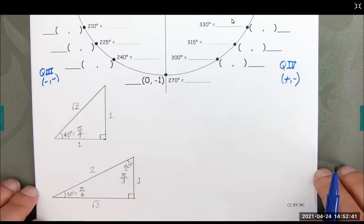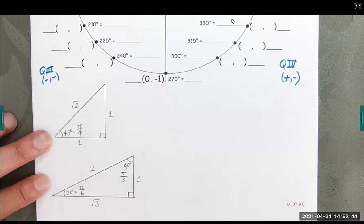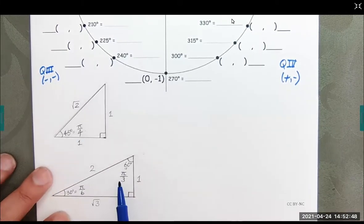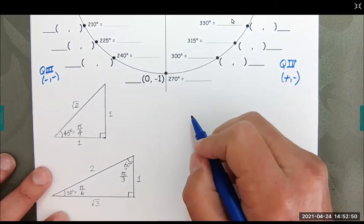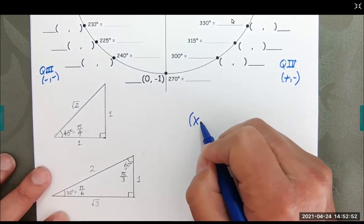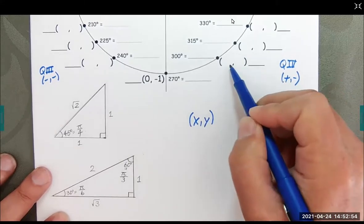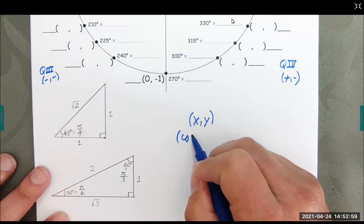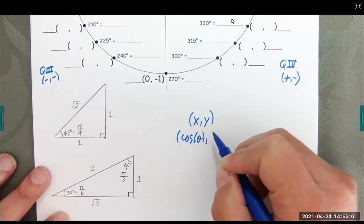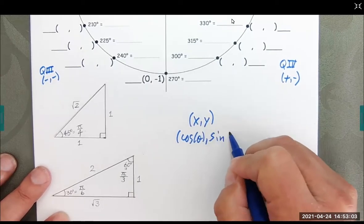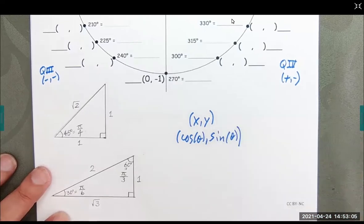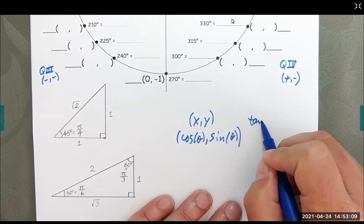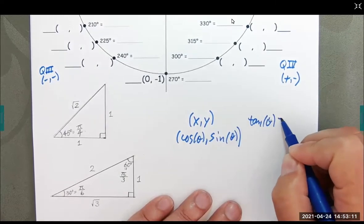We will also need our special right triangles, written in degrees and in radians. We should keep in mind that for all ordered pairs we'll be working with: cosine theta is X and sine theta is Y. We also want to recall that tangent theta is Y over X.